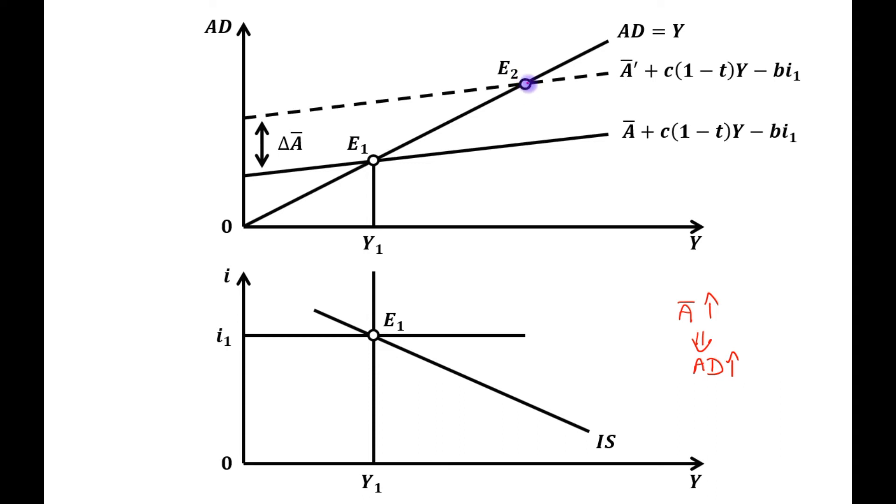This will be the new equilibrium point named as point E2 and new equilibrium level of output is OY2. We have shown these combinations in the lower panel, but one thing to notice is that this new equilibrium level of output is achieved also at interest rate OI1. That means this time there has been an increase in AD due to the increase in A bar without any change in interest rate. Interest rate remains same at OI1.